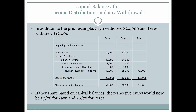If they shared based upon capital balances, the respective ratios would now change. Next year, dividing income based on capital balances, the starting point would be $52,000 out of $78,000 for Zane and $26,000 out of $78,000 for Perez. This brings us to Zane's updated capital of $86,000.